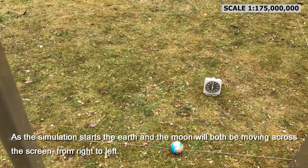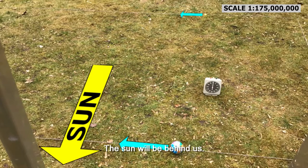As our simulation starts the Earth and the Moon will both be moving across the screen, from right to left. The Sun will be behind us. So here it goes.